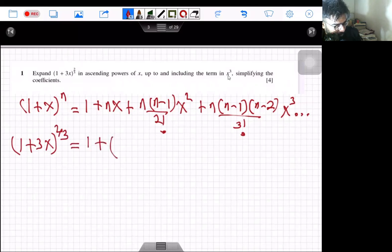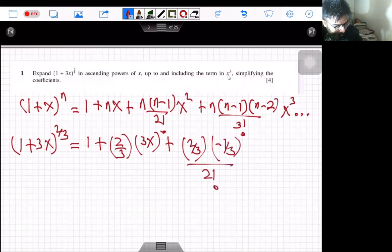1 + (2/3) times 3x + (2/3) multiply by (2/3 - 1), what is 2/3 - 1? This is -1/3, then divided by 2 factorial, multiply by (3x)².